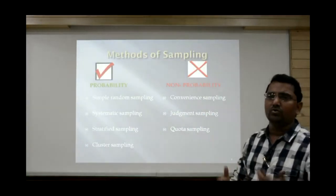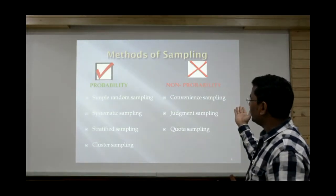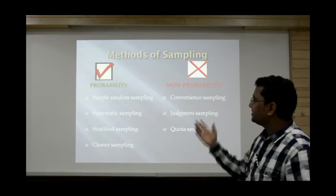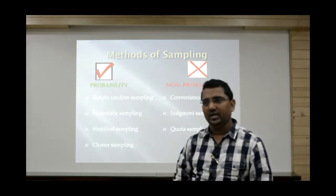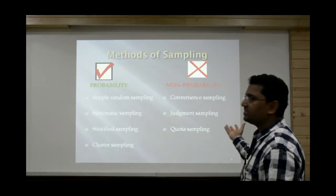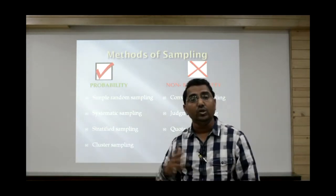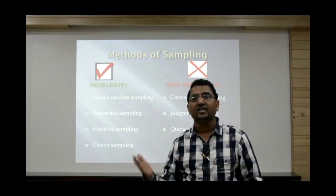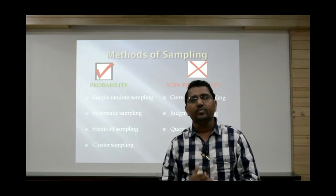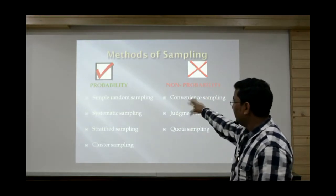There are two major sampling techniques: probability techniques and non-probability techniques. In probability sampling we have simple random sampling, systematic sampling, stratified sampling, and cluster sampling. In non-probability sampling we have convenience, judgment, and quota sampling. Non-probability sampling techniques are not used in further statistical analysis — your sample must be random.